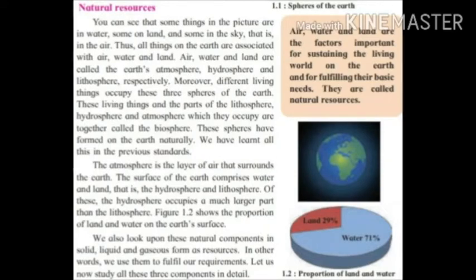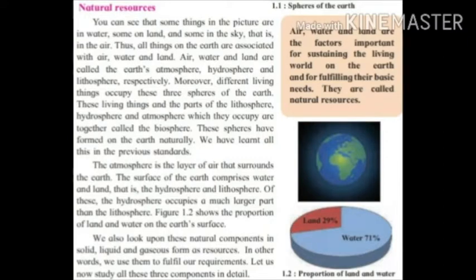All things on the earth are associated with air, water and land. Air, water and land are called the earth's atmosphere, hydrosphere and lithosphere respectively. Different living things occupy these three spheres of the earth — they stay in the lithosphere, hydrosphere or atmosphere — and all together this is called the biosphere.